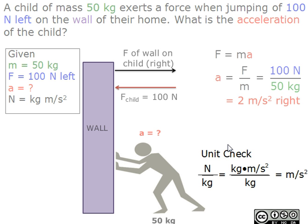Now for the unit check. Remember that newtons equals kilograms times meters per second squared. So newtons over kilograms equals kilograms times meters per second squared over kilograms. With this we can cross out the kilograms and we get meters per second squared as our unit.